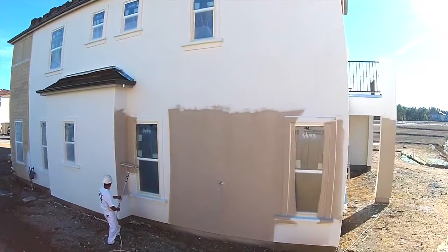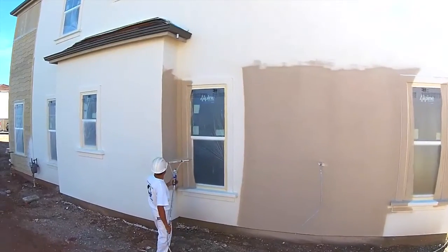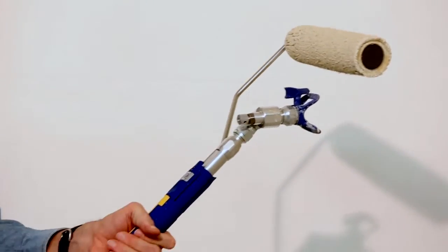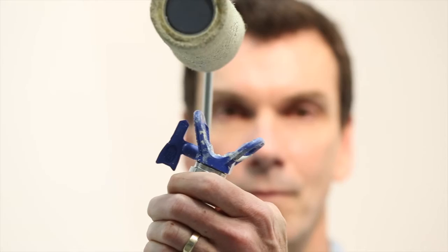The spray extension also allows you to spray corners to avoid some of the cutting in that is normally required with a brush. To avoid spraying the roller, angle the spray head away from the roller. Spray the corner, readjust the spray head, and continue jet rolling.